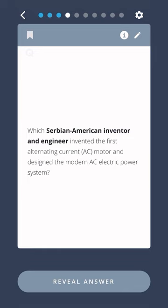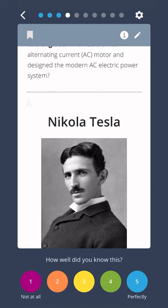Which Serbian American inventor and engineer invented the first alternating current AC motor and designed the modern AC electric power system? Nikola Tesla.